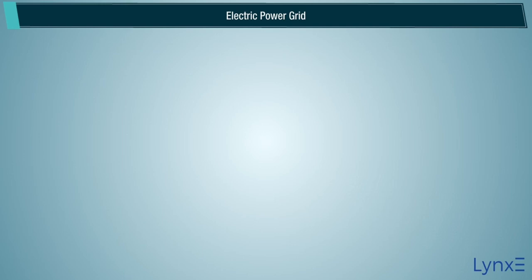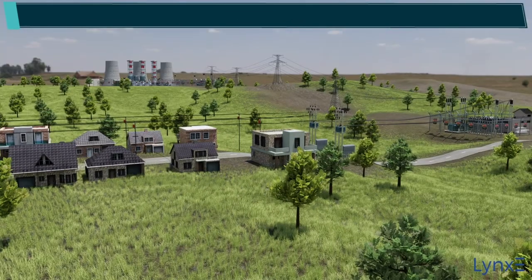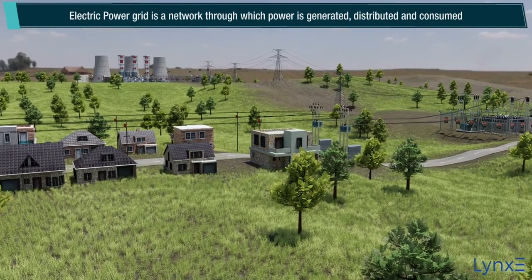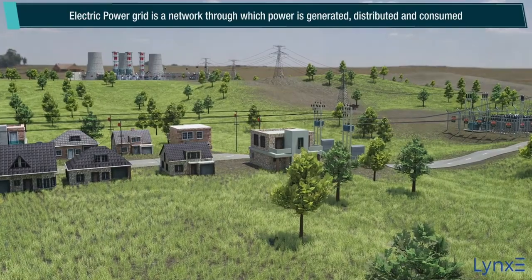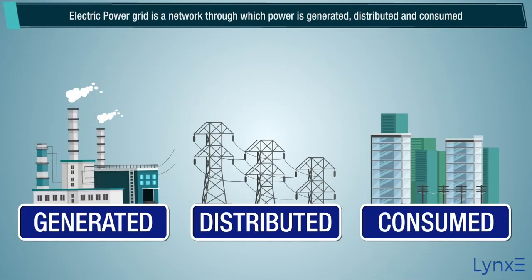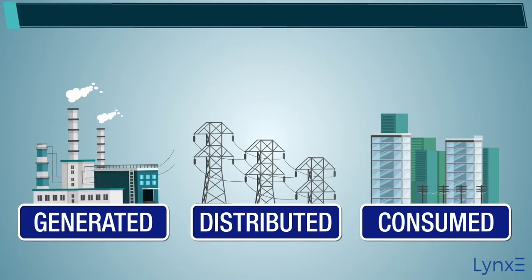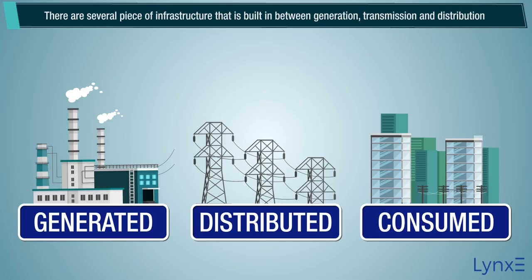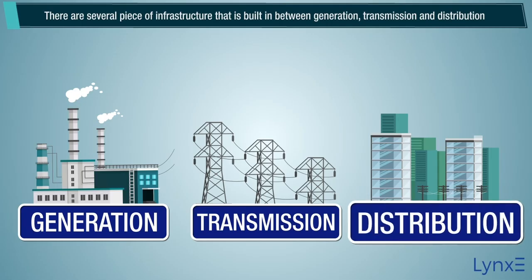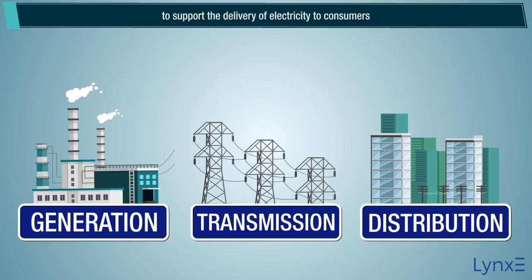Electric Power Grid is a network through which power is generated, distributed and consumed. There are several pieces of infrastructure that are built in between generation, transmission and distribution to support the delivery of electricity to consumers.